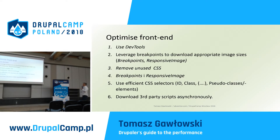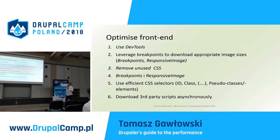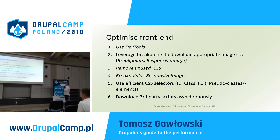Optimize your front-end. Use DevTools. Leverage responsive breakpoints to download appropriate image files — a lot of users still on mobile phones use slow network connections, so smaller images mean faster pages. Remove unused CSS. Use efficient CSS selectors — ID classes first, pseudo-classes at the end if you must. If you use third-party scripts, load them asynchronously.